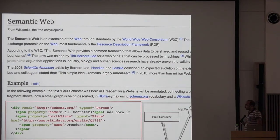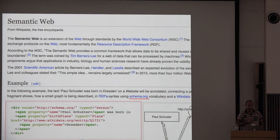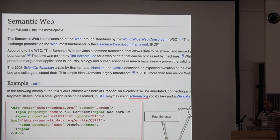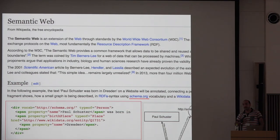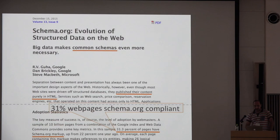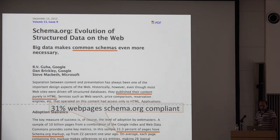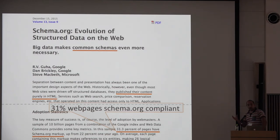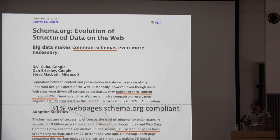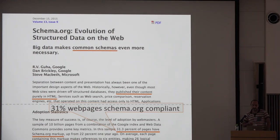If you look at the wiki page for the semantic web, you'll see that schema.org is the only example exposed right at the beginning — it's rooted as a way people can expose structured data. A study by Dan Brickley and Guha from December last year shows that more than 30% of websites are already providing structured content in schema.org, which is impressive and contributes to linked data and the semantic web.